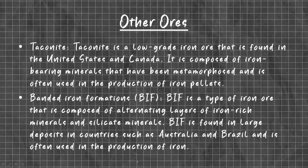Other Ores. Taconite. Taconite is a low-grade iron ore that is found in the United States and Canada. It is a compressed iron-bearing mineral that has been metamorphosed and is often used in the production of iron pellets.